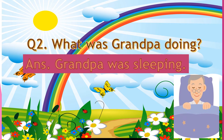Question number 2: What was Grandpa doing? The answer is, Grandpa was sleeping. How to write Grandpa? G-R-A-N-D-P-A. Was? W-A-S. Sleeping? S-L-E-E-P-I-N-G. Grandpa was sleeping.